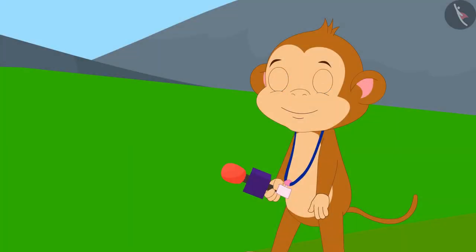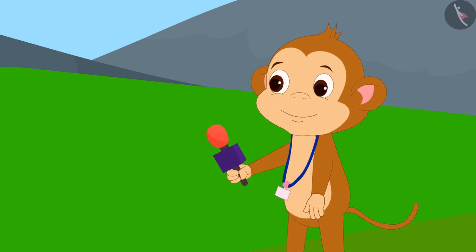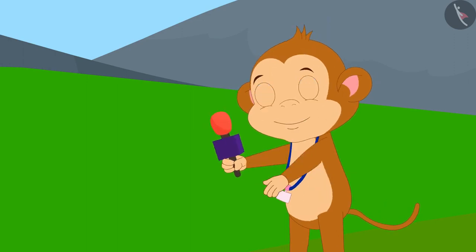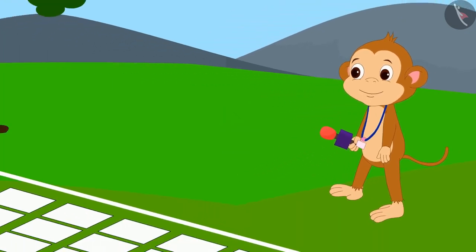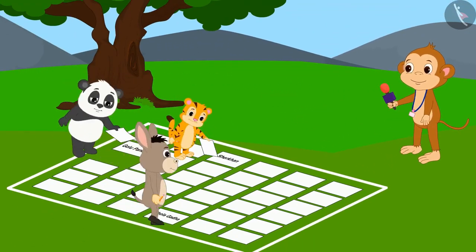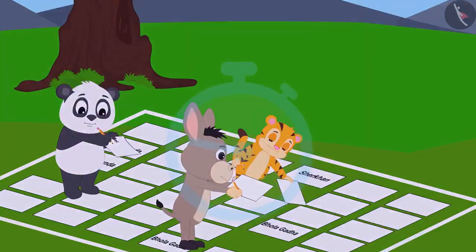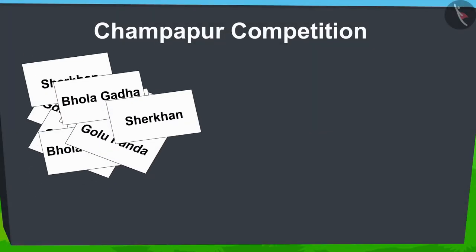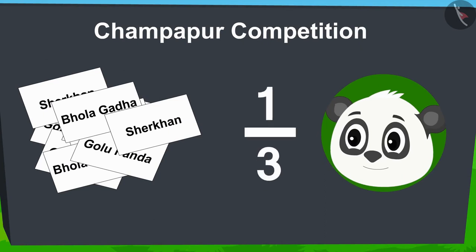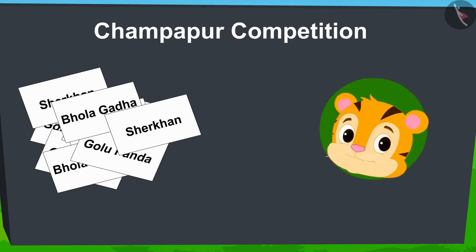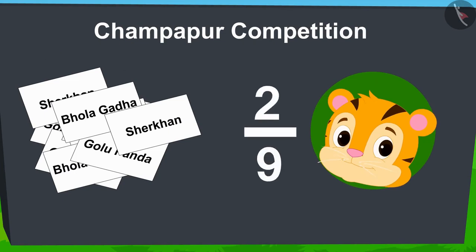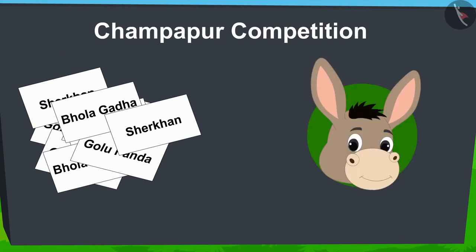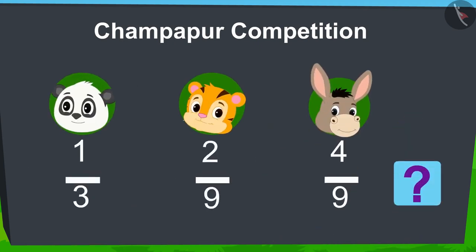The contestant who writes his name on the most pieces of paper will win the competition. Babban, the moderator of the competition, indicated the start of the time and all the contestants quickly started writing their names on pieces of paper. Time is up and now the counting has begun. On counting, it was found that Golu's name is written on one-third part of the total paper pieces, Share Khan's name on two-ninth part, and Bhola's name on four-ninth part. Children, can you tell who is the winner of the competition?